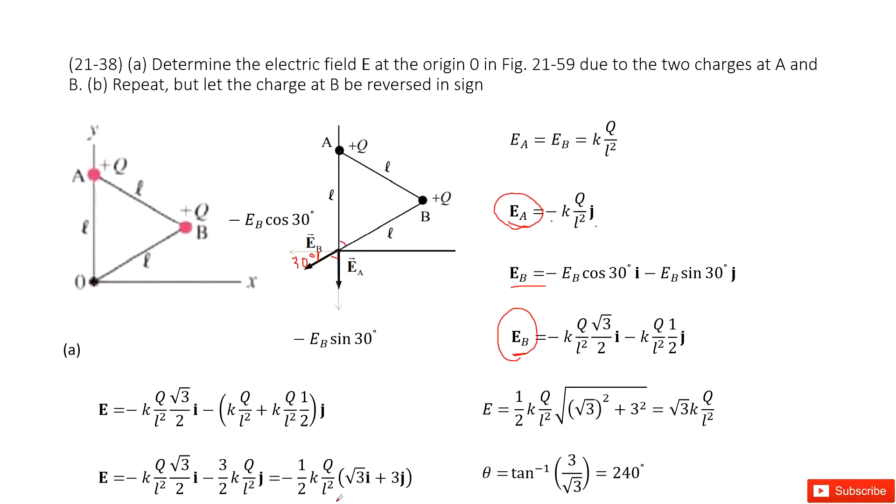If we want to find the magnitude of the electric field E, we take the x component squared plus y component squared. And if you want to find the angle theta, you can use arctangent of Ey over Ex.